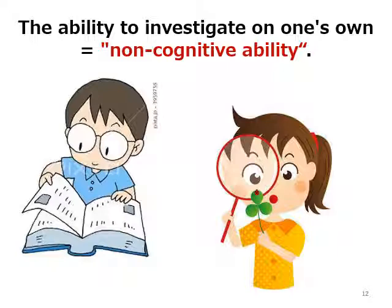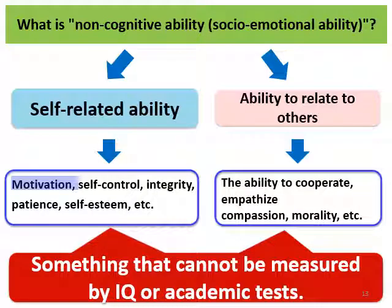As you know, the ability to investigate on your own is called non-cognitive ability. Non-cognitive abilities are divided into two categories: abilities related to oneself, such as motivation, self-control, and self-affirmation; and abilities related to others, such as cooperativeness and compassion. This is a concept advocated by the OECD and other organizations.